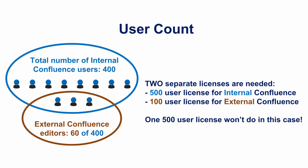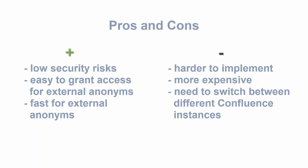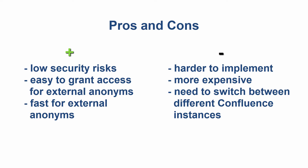This means that you will have to pay extra money. For example, you have 400 employees in your company and 60 of them added documents in your Confluence instance with public access. In this case, you have to buy two Confluence licenses: a 500-user license for your internal site and an additional 100-user license for the external Confluence. Such options may impose additional difficulties on your users — they need to log in to two different systems. It's also complicated to move drafts from your corporate site to the Confluence with anonymous access.